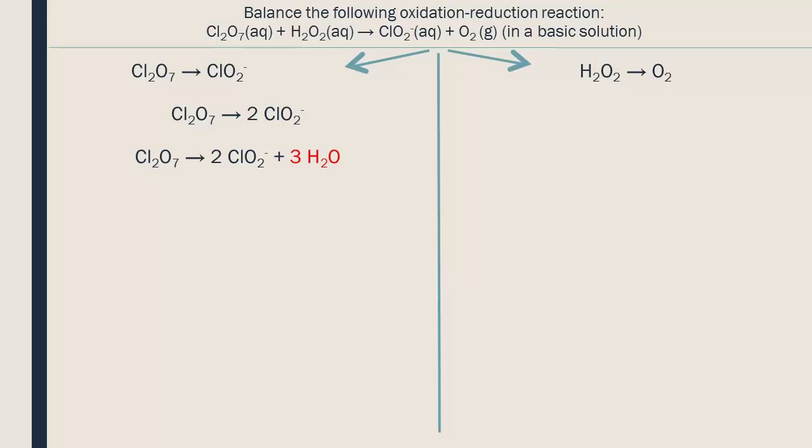Next, we can balance the hydrogens by adding protons. There are six hydrogens on the right side of the equation and none on the left, so by adding six H+ ions to the left side, we are able to balance the equation.